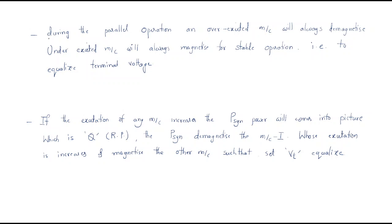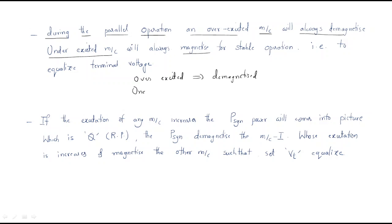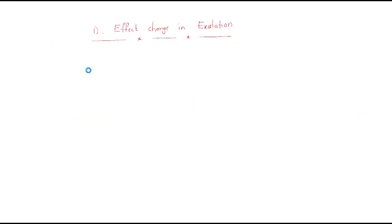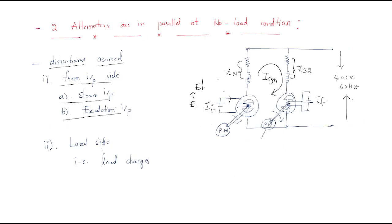During parallel operation, an over-excited machine will always demagnetize. If the machine is over-excited, then automatically it is demagnetized. An under-excited machine will always magnetize — if it has low magnetization, that is under-excited, that machine's magnetization will be increased. This is done for stable operation — to maintain equal terminal voltage. When E1 is high and E2 is low, there is no equal terminal voltage.